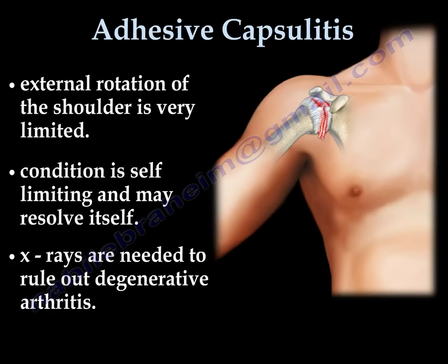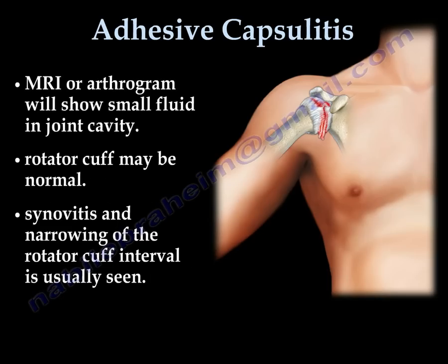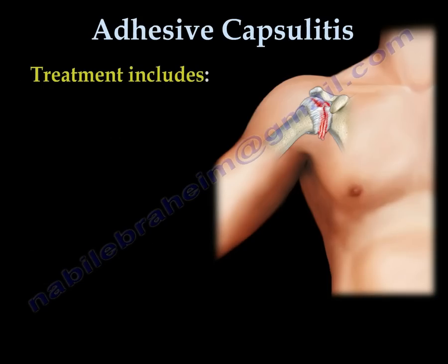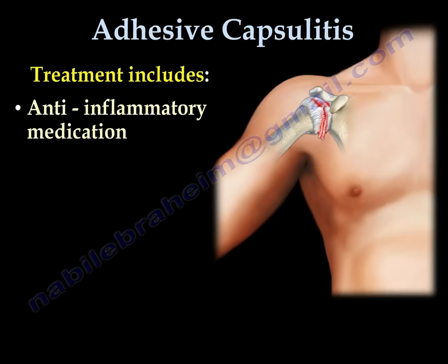The condition is largely self-limited and may resolve by itself. It is better to get an X-ray to rule out degenerative arthritis of the shoulder joint. MRI or arthrogram may be needed and will show a small amount of fluid in the joint cavity. The rotator cuff will probably be normal, but synovitis and narrowing of the rotator cuff interval is usually seen.